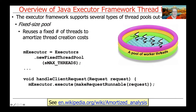Probably the easiest type of thread pool to explain and use is called a fixed-size thread pool. As the name suggests, it has pre-allocated a fixed number of threads that are then reused when different requests come in, in order to amortize the thread creation costs. That means we pre-spawn them so we don't have to incur the costs of spawning new threads with each new request.